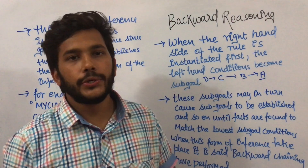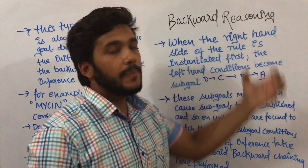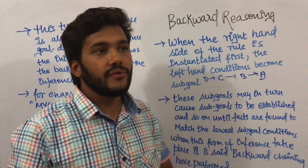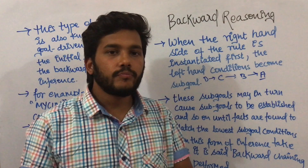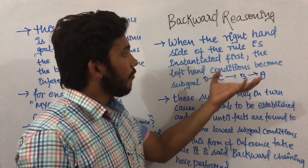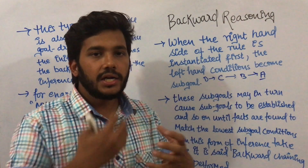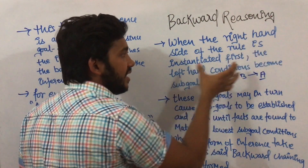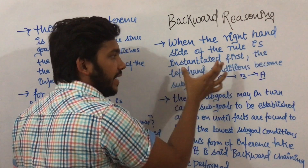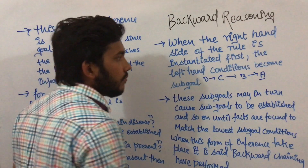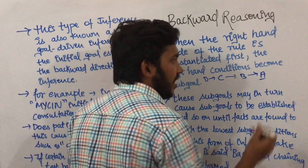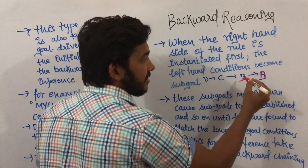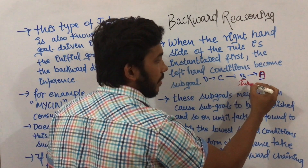In this video I am going to talk about backward reasoning. As the name suggests, backward reasoning proceeds from right hand side to the left hand side. When the right hand side of the rule is instantiated first, the left hand condition becomes the sub-goal — like we started from A on the right hand side, then B on the left hand side becomes the sub-goal.